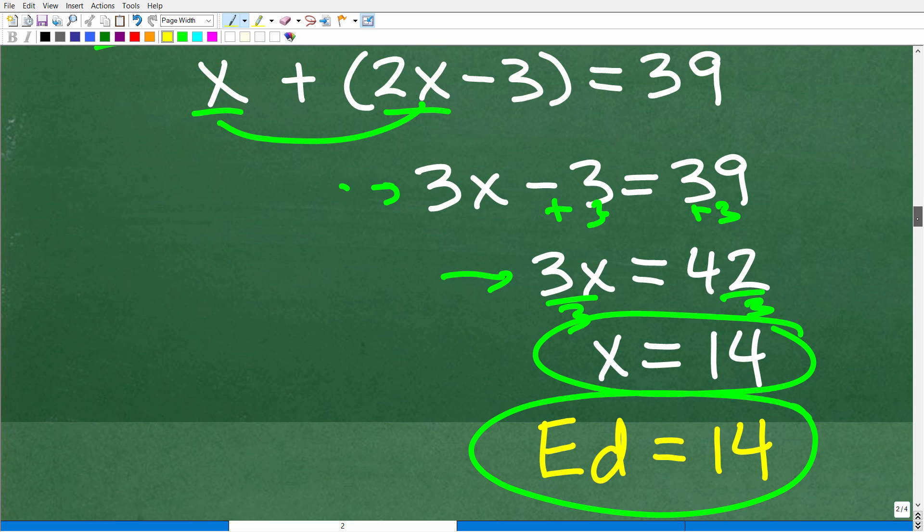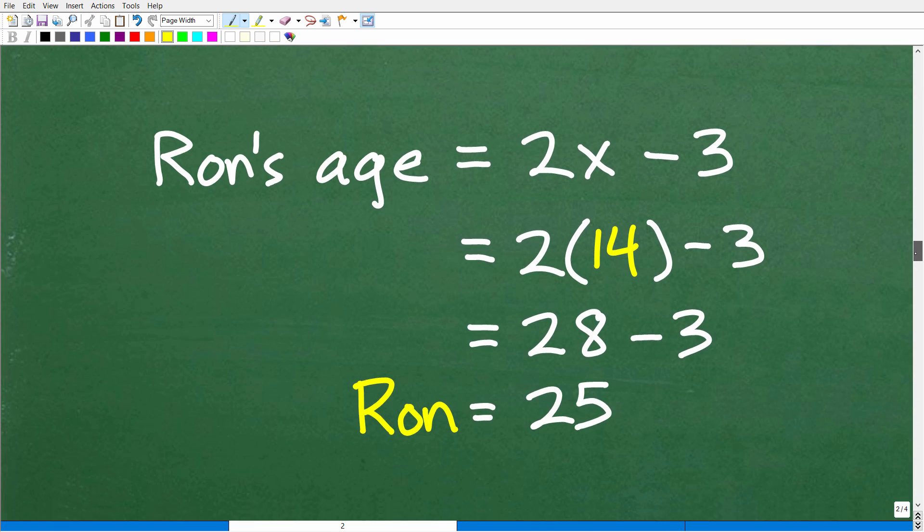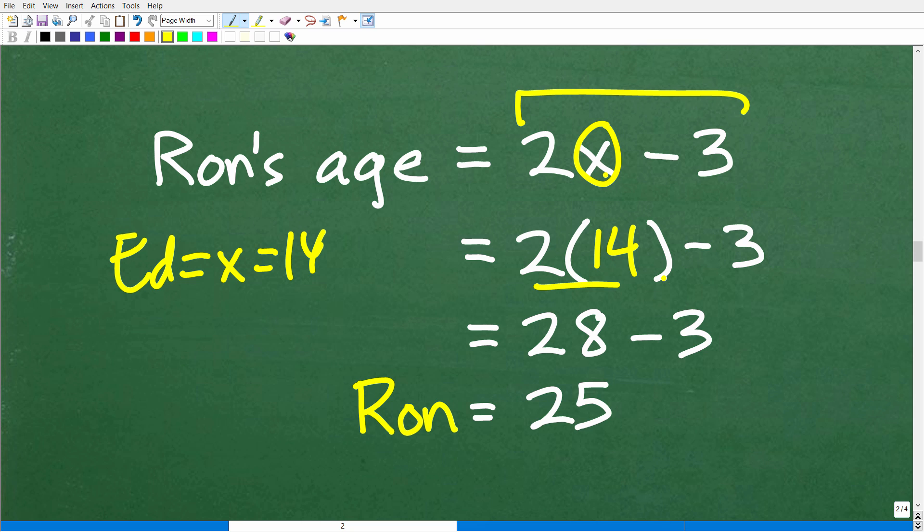But now let's finish this problem up because once we have Ed's age, which is 14, Ron's age is super easy to get. Remember, it's going to be 2X minus 3. So Ed, we said Ed's age is going to be X. We solved for X that was 14. So we're going to plug in 14 for X right here. So 2 times 14 minus 3. So 2 times 14 is 28 minus 3 is 25. So Ron's age is 25. And if Ed is 14 and Ron is 25, well, the sum is 39. So that checks out.